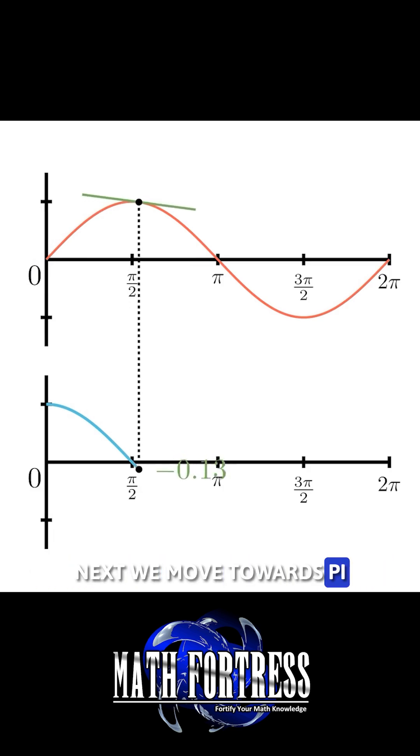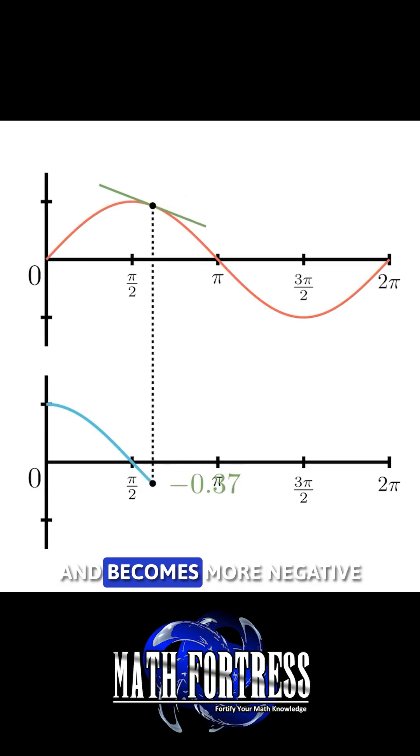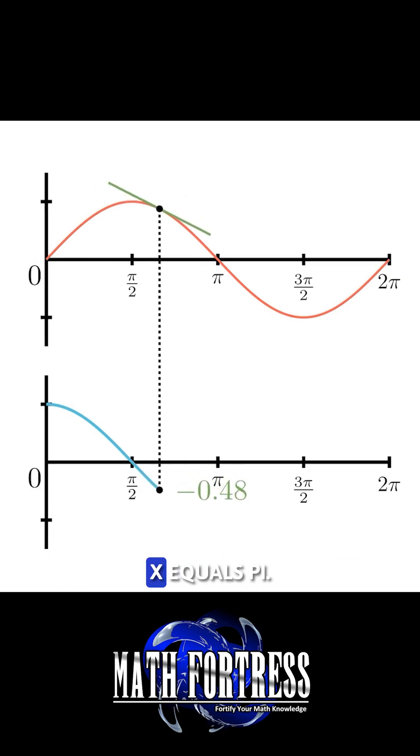Next, we move towards pi, and the slope of the tangent line is now negative and becomes more negative as we move towards x equals pi.